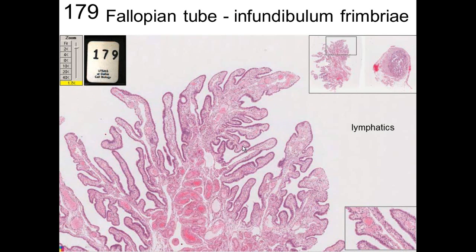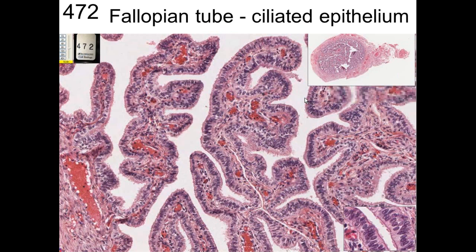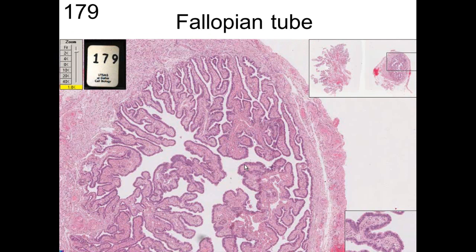Here we can see the epithelium — nice epithelium on the surface — and connective tissue. We can see lymphatics running through there that help keep these things somewhat rigid and suspended in the oviduct. There are nice projections, and you can see little ciliated cells with mucus. Blood vessels and a nice lymphatic network run through there as well.